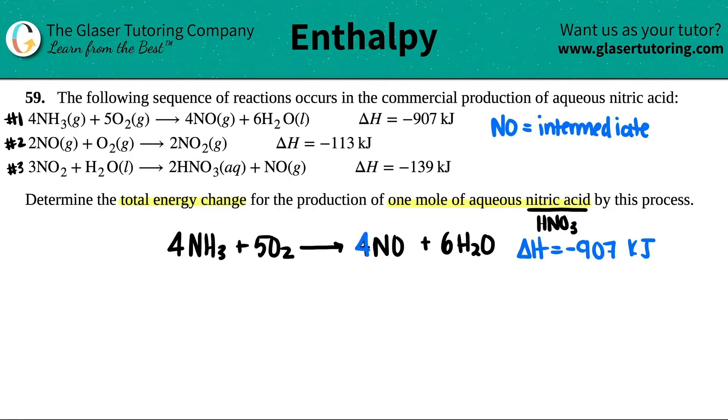So now this is the beauty of Hess's law. We can multiply equations by a number so that we satisfy how much we need. In this case, we need four NOs. If I write down my second equation, two NO plus O2 yields two NO2, and that delta H is a negative 113 kilojoules. If I made four NOs, I have to get rid of all of them. What am I going to multiply to get to four for the NOs? They have to be the same. I'm going to multiply by two.